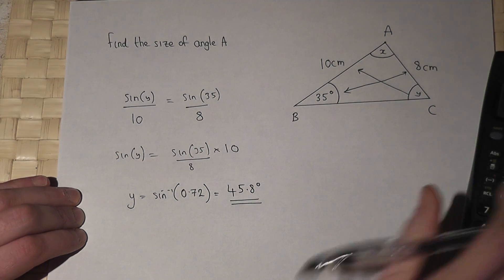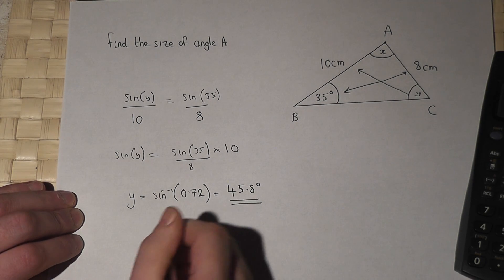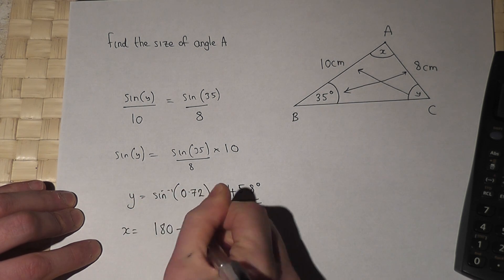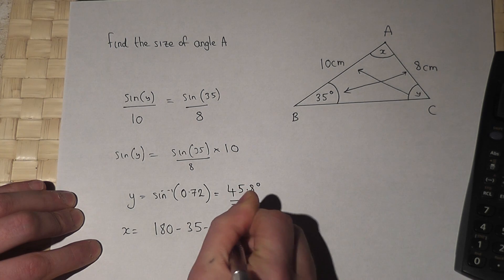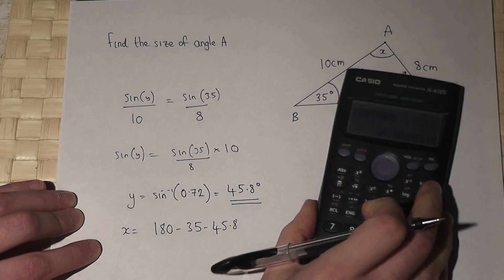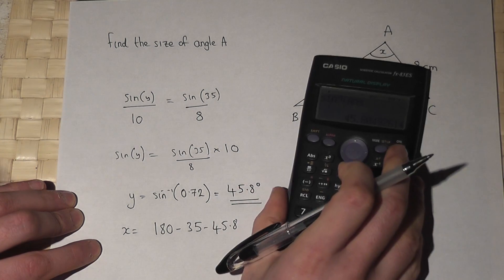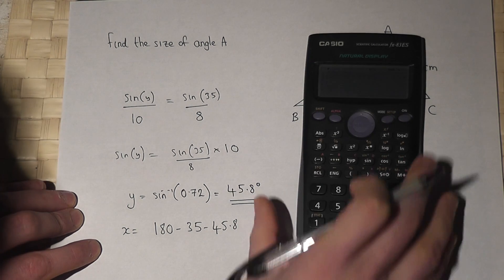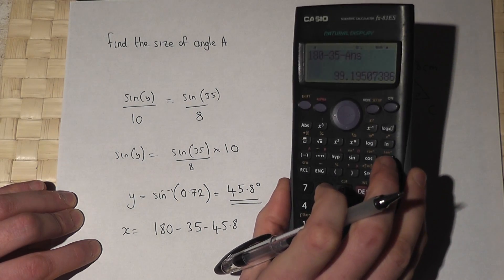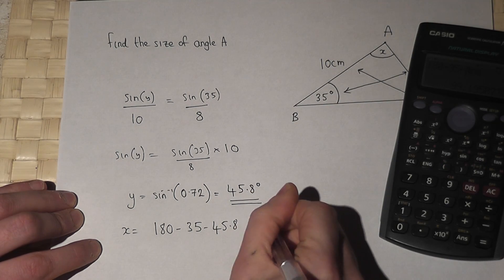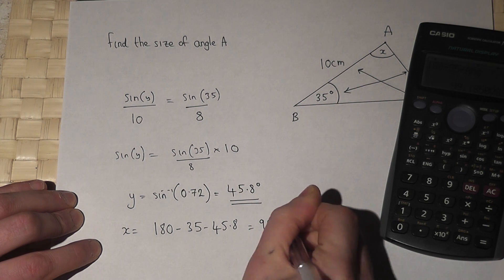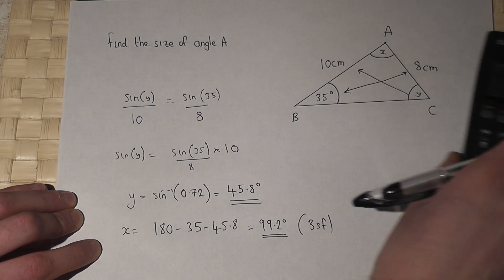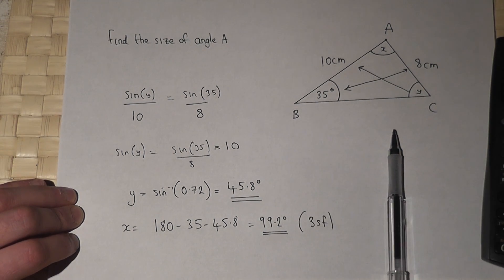So we found Y to be 45.8 degrees. So to find X, we'll do 180, take 35, take 45.8. So I've got the accurate number stored there. So 180, take 35, take ANS, press enter, and we get 99.2 degrees to 3 significant figures.